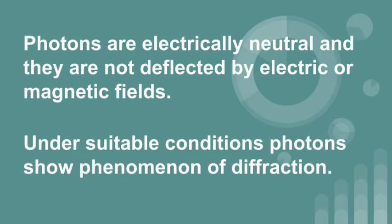Photons are electrically neutral and they are not deflected by electric or magnetic fields. Under suitable conditions, photons show phenomenon of diffraction. So, these are some of the characteristics of a photon.